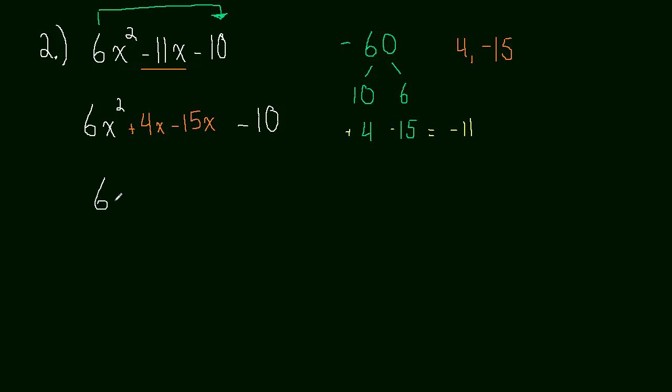We'll get 6x squared plus 4x. That's our one group. And then we'll add negative 15x minus 10. Now we want to factor out anything that's common between these. In this case, we get 2x, a 2x times 3x plus 2 comes out. And then we'll add to that. What comes out of this? Negative 5, it looks like to me.